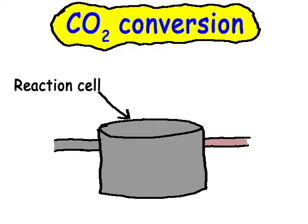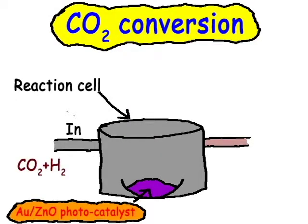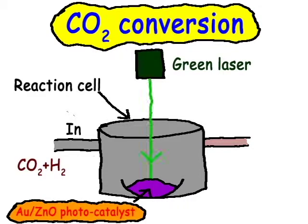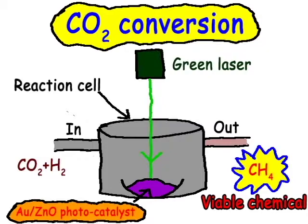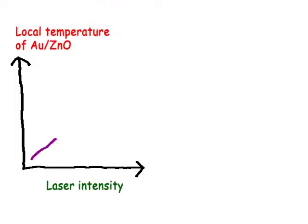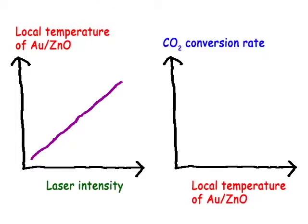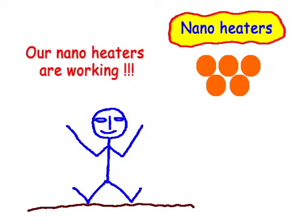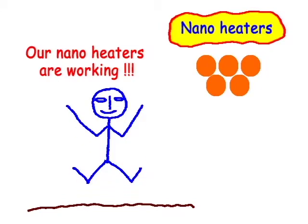We tested carbon dioxide conversion inside the laboratory using a green laser and we detected methane as a product. When we increase the laser intensity, the local temperature of zinc oxide will be increased. Increasing the local temperature of zinc oxide also causes the carbon dioxide conversion rate to increase. This is the successful story of our nano-heaters.